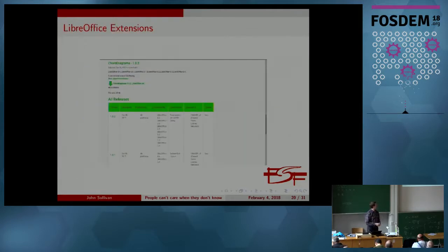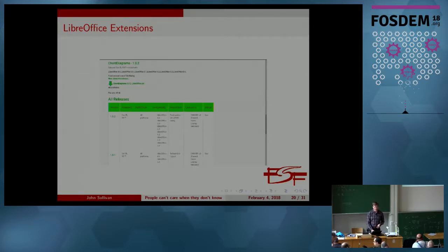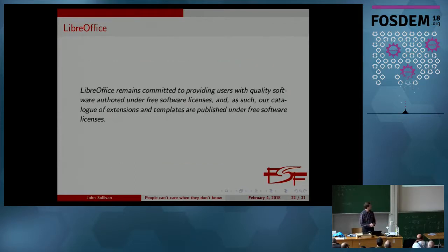LibreOffice has a view for their extensions that I like because they show version history — and different versions of software can have a different license. They actually maintain a recent version history and have a column for the license for each version. This is for the core diagrams extension, and it indicates the license as GNU GPLv3 — though once again it doesn't specify 'or any later version' or 'GPLv3 only.' As for what a proprietary LibreOffice extension looks like — there aren't any. LibreOffice has a policy that all extensions distributed from the official site are free software.